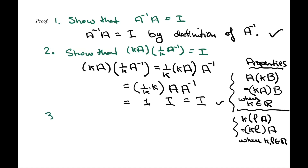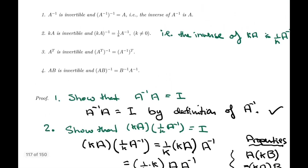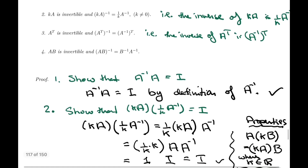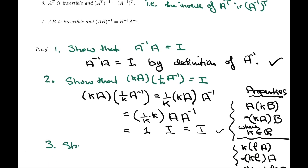We're ready to look at number 3. Number 3 says that if A is invertible, then A transpose is also invertible, and its inverse is A inverse transpose — i.e., the inverse of A transpose is A inverse transpose. We know A inverse transpose exists because A is invertible, so A inverse exists and we can transpose it. So we need to show that A transpose times A inverse transpose is equal to I.